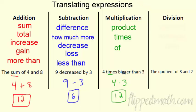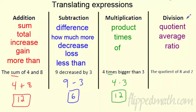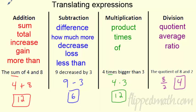For division, the key word is quotient — that's what division of two numbers is called. You'll also see average and ratio. So '8 divided by 2' can be written as a fraction bar with 8 over 2, which equals 4.